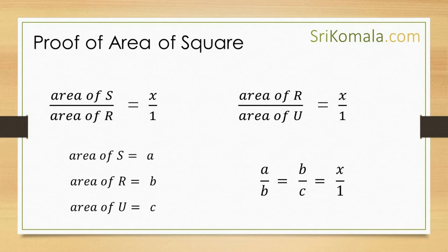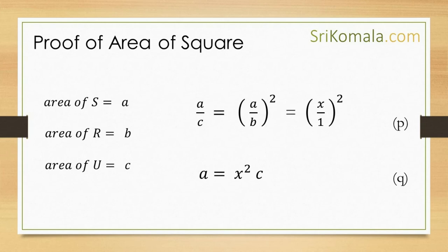If we consider the area of square S as a, the area of rectangle R as b, and the area of unit square as c, then it can be understood that the relation between the two ratios actually fits the premise of the duplicate ratio, which is a per b is equal to b per c — that is, x per 1, as shown in the equation. By applying the concept of duplicate ratio, we find that a per c is the duplicate ratio of b per c, as stated in equation p.